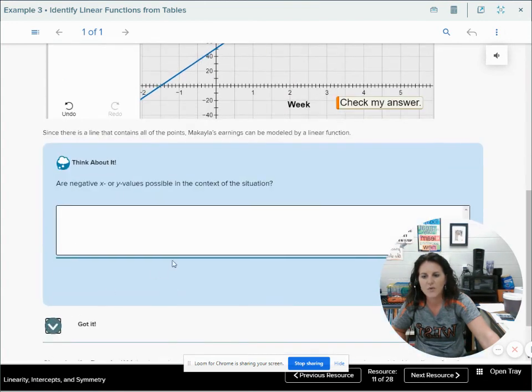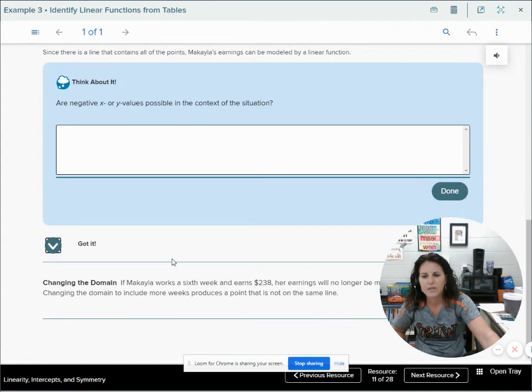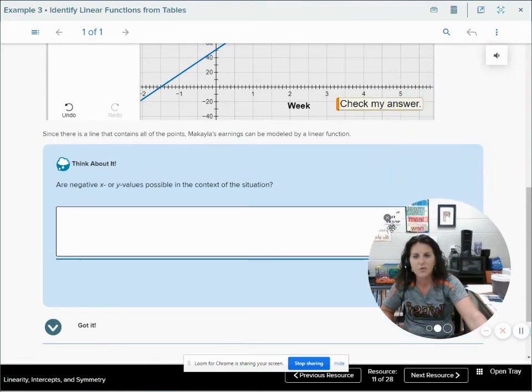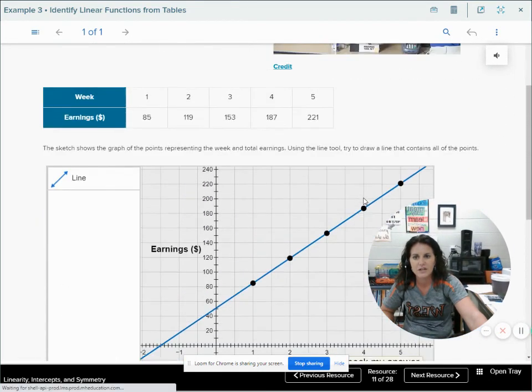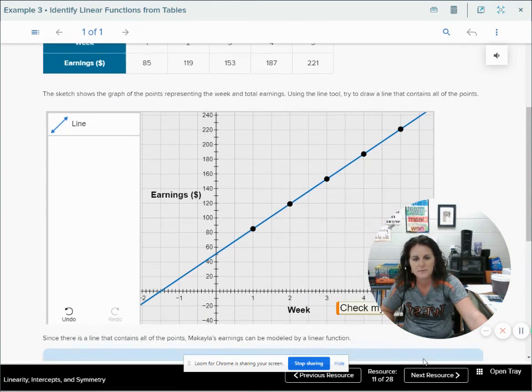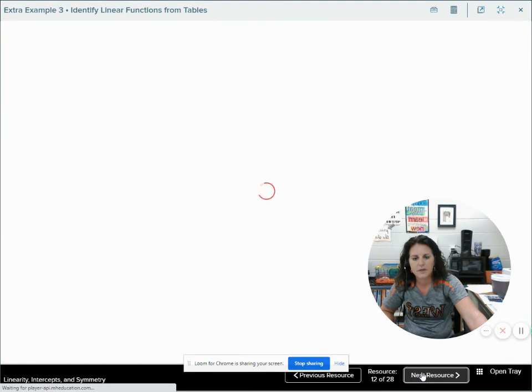Something to watch out for: changing the domain. If Michaela works a six-week and earns 238, her earnings will no longer be modeled by a linear function. Changing the domain to include more weeks produces a point that is not on the same line. Therefore, it would not be a linear function if we were to change that.